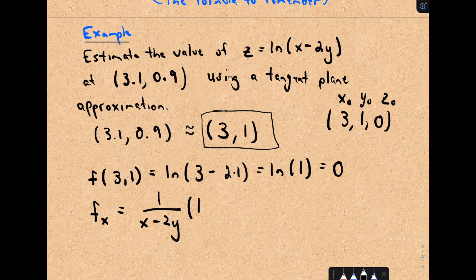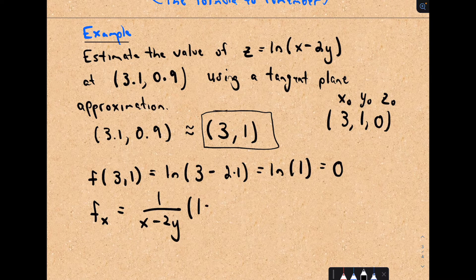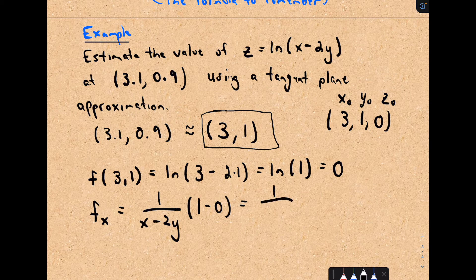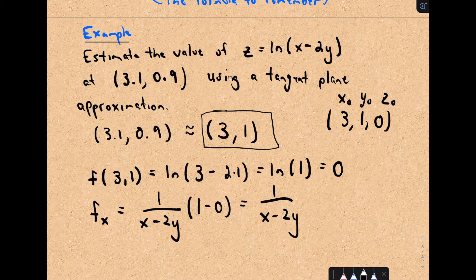And when I take the derivative of this quantity, the derivative of x is just 1, and the negative 2y is like a constant, so that's just going to be 0. So it looks like we just get 1 over x minus 2y. That's going to be our partial of x.